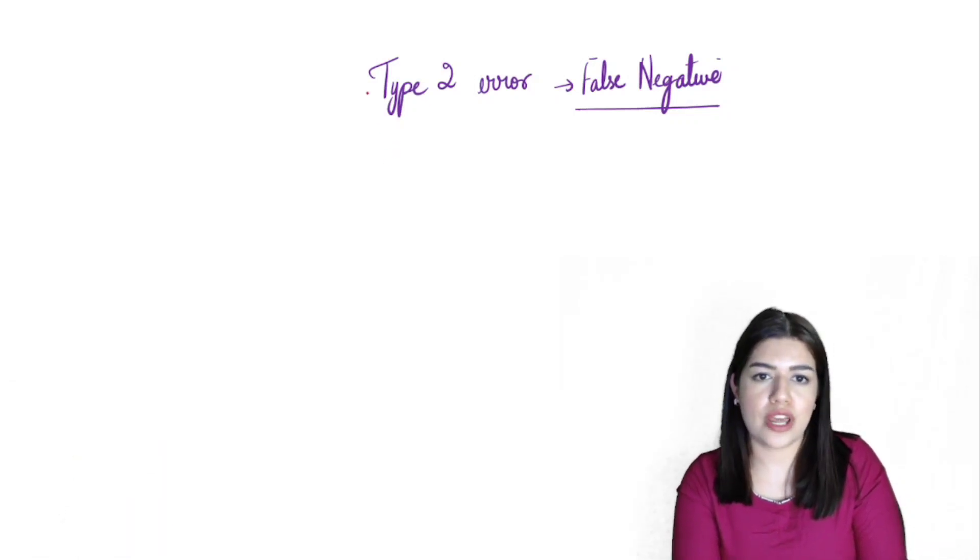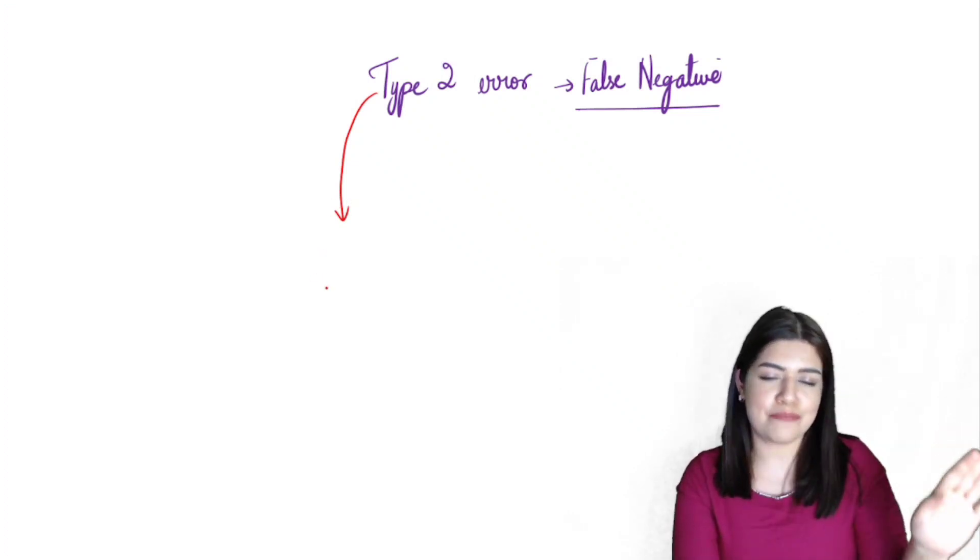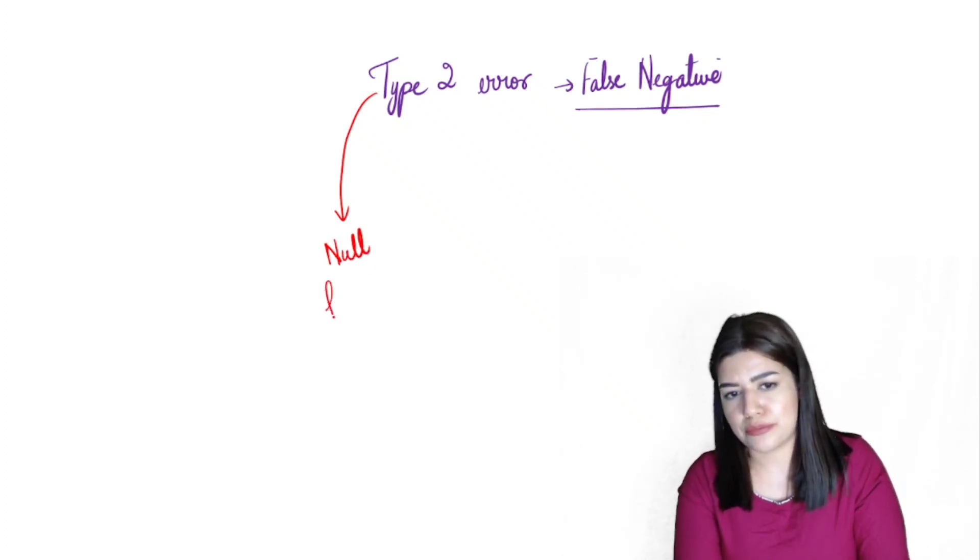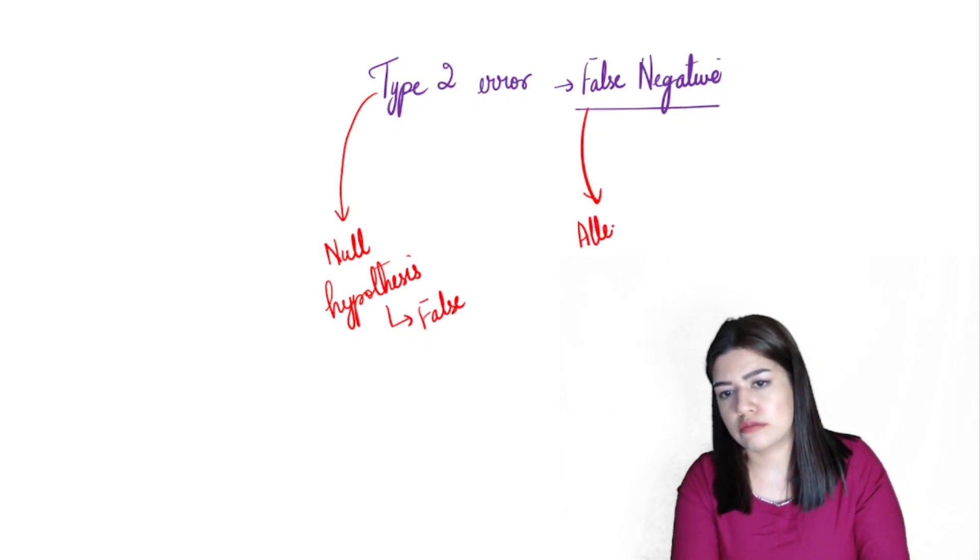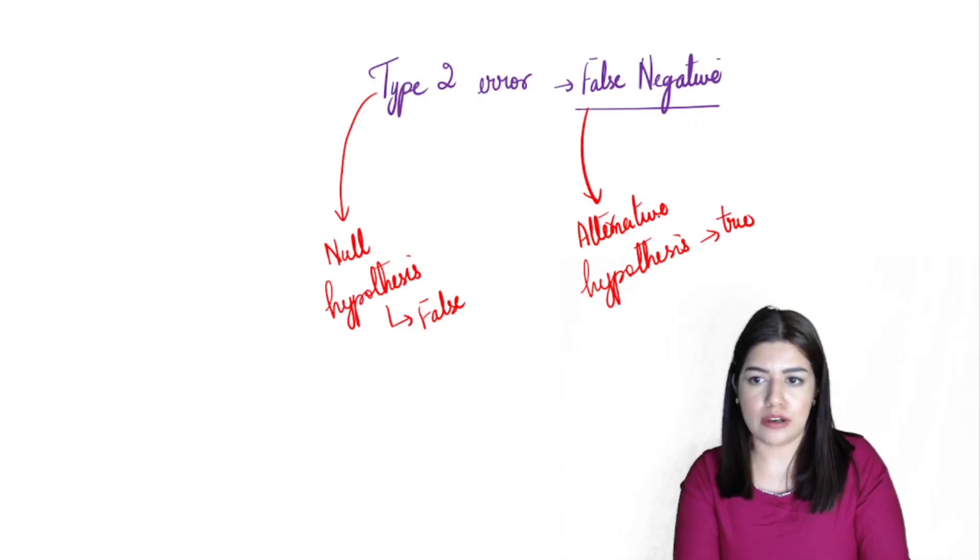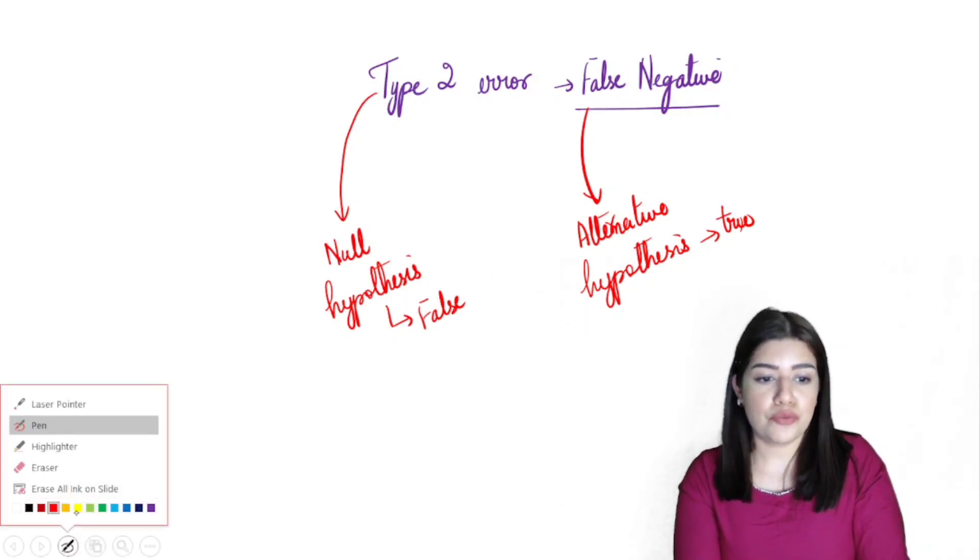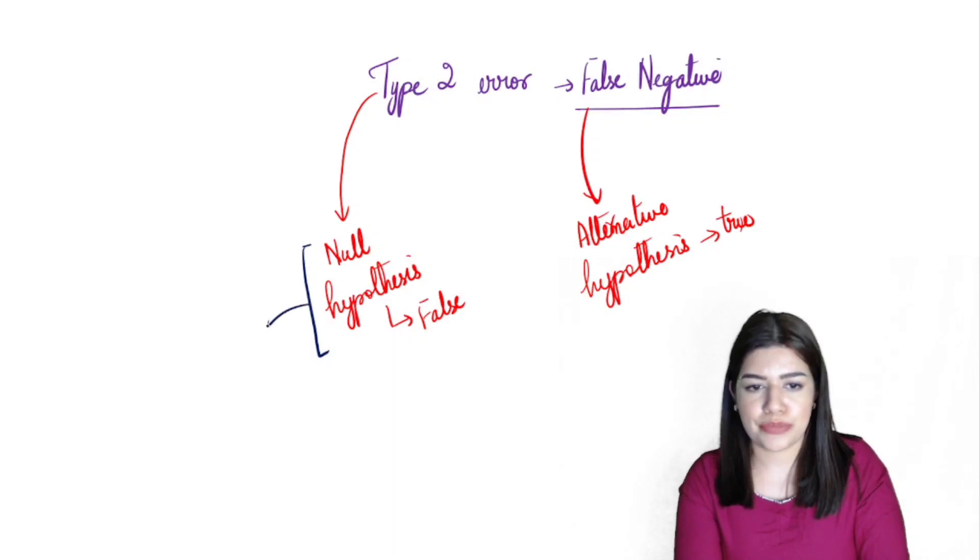Now if I were to tell you that there is a null hypothesis which is absolute rubbish, not correct—the null hypothesis stands to be false here, is actually false—and the alternative hypothesis is actually true. But what we have done here is we have rejected the alternative hypothesis which is meant to be true, and we have simply accepted the false null hypothesis.